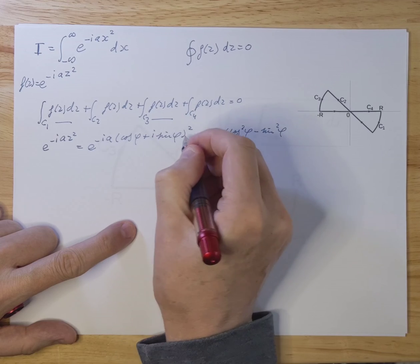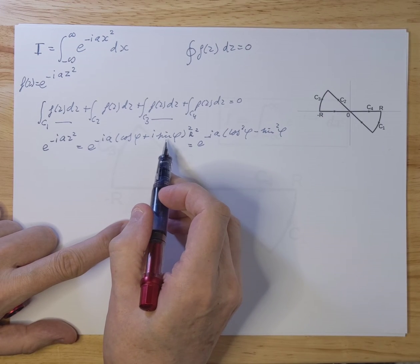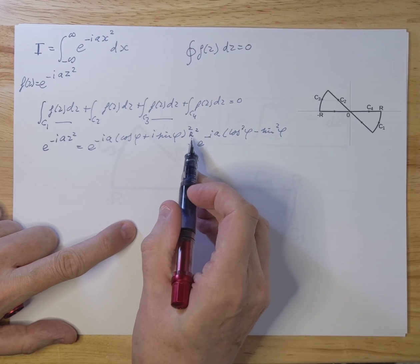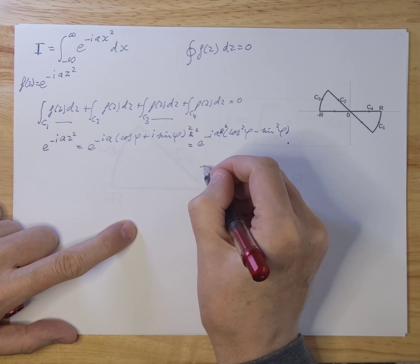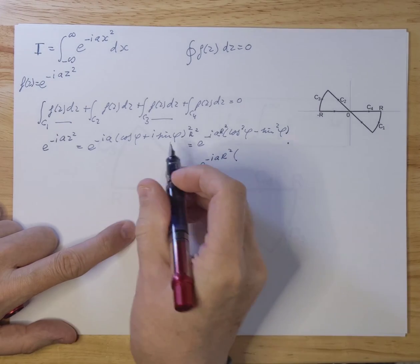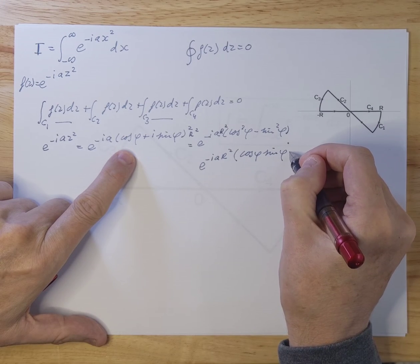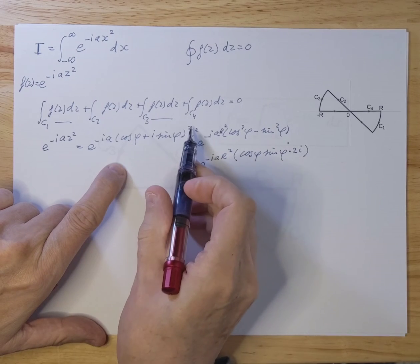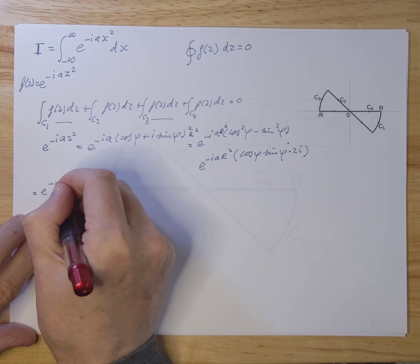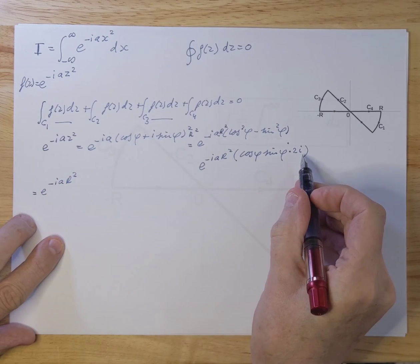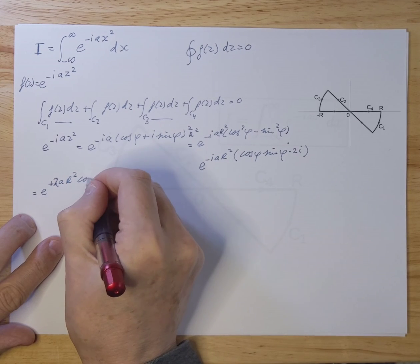If you work that out, you get minus i·a·(cosine φ − sine φ), and since a is a real number that gives amplitude one. We have to put an r² here because z = r·cosφ + r·sinφ·i, so squaring gives the r² factor. The interesting part is minus i·a·r²·(cosφ·sinφ)·2i, which gives a cross term of plus 2a·r²·cosφ·sinφ.